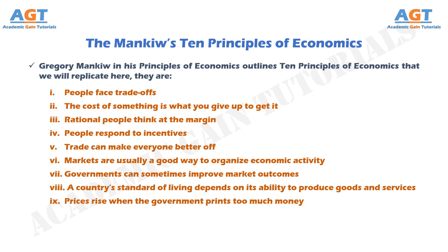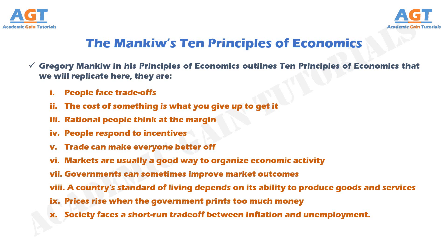And finally, Principle No. 10: Society faces a short-run trade-off between inflation and unemployment. If inflation is so easy to explain, why do policy makers sometimes have trouble ridding the economy of it? One reason is that reducing inflation is often thought to cause a temporary rise in unemployment. The curve that illustrates this trade-off between inflation and unemployment is called the Phillips curve, after the economist who first examined this relationship. The trade-off between inflation and unemployment is only temporary, but it can last for several years.